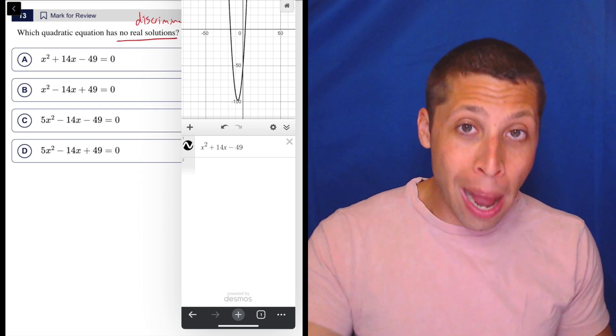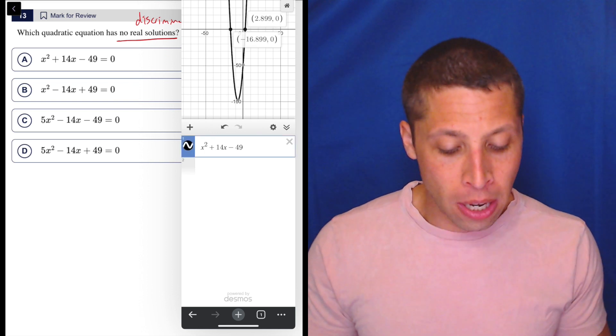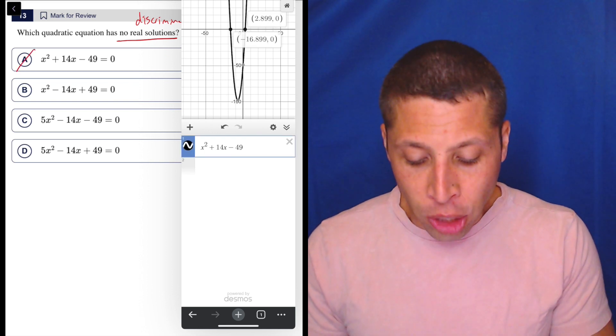And this time though, when we have a parabola, the solutions are the x-intercept. So we can kind of see them. I don't care about the values, but they're right there. So that's what I'm checking for.